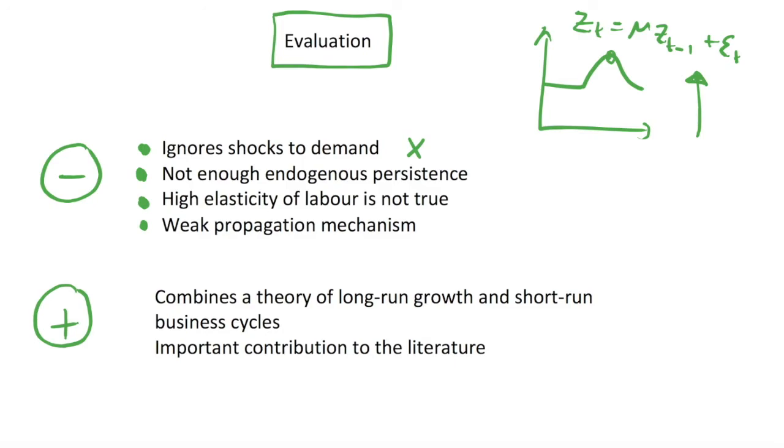The fourth point is that there's a weak propagation mechanism. This kind of ties into our lack of endogenous persistence. We're not really propagating the shocks in the models very well. The model doesn't give us a great idea of what's causing such persistent business cycles that we see in reality, so the model is not great at replicating reality unless we make some unrealistic assumptions to go with the model.